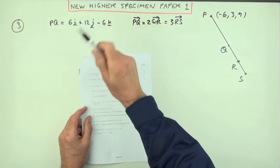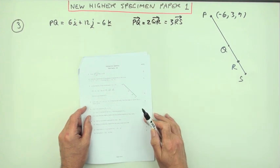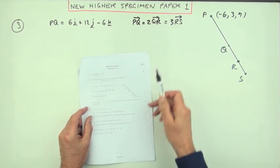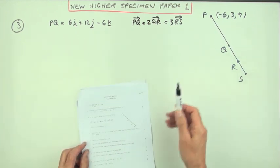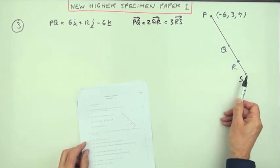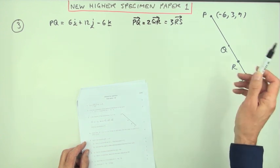Number three then from this new higher specimen paper number one, a little vectors question. Five marks and all it says after all the information is just find the coordinates of S, no other clues apart from this diagram and these two statements here.